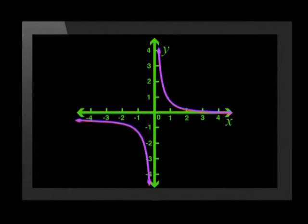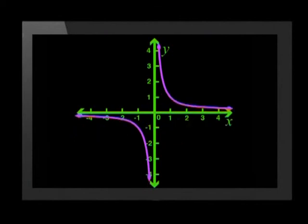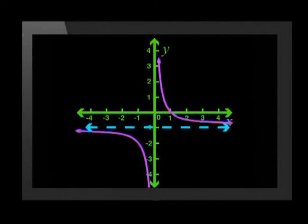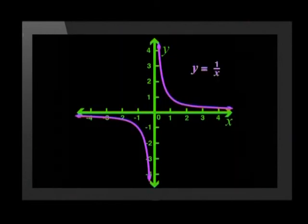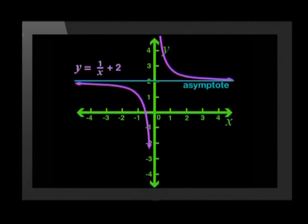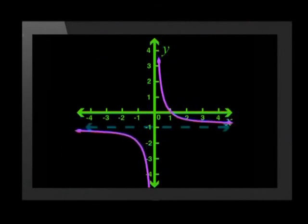Let's now decrease the value of q. Check carefully how the points on the graph move. If we make q minus 1, then the whole parent graph shifts down one place. So it looks like you were correct. As the value of q increases, the parent graph shifts up by q units. As the value of q decreases, the parent graph shifts down by q units.